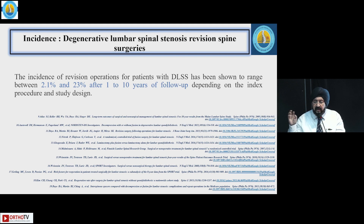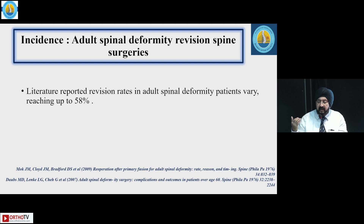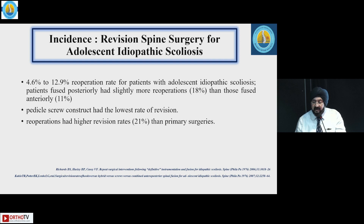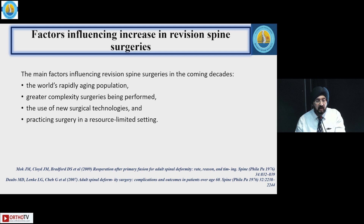Depending on what type of surgery was done before, in degenerative lumbar spinal stenosis the incidence varies from 2.1% to 23% depending on how long patients were followed up, and 8% in adjacent segment degeneration. In adult spinal deformity the incidence has ranged up to 58%, and in adolescent idiopathic scoliosis 4.6% to 12.9%. Posterior surgeries have slightly more re-operations than anterior spine surgeries, and re-operations had higher revision rates than primary surgeries.